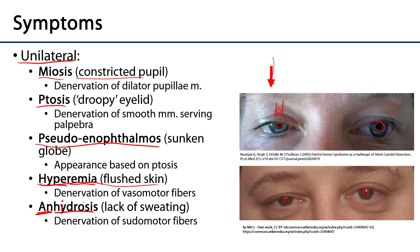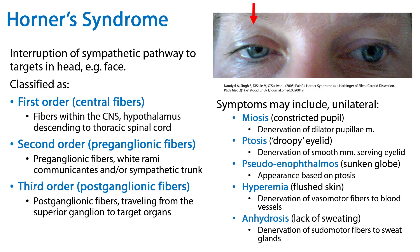So if you see any cluster of unilateral miosis, ptosis, pseudoenophthalmos, hyperemia, or anhydrosis, you'll understand — given the sympathetic pathways to these various target tissues — why. We've discussed the types of Horner's syndrome, where the interruptions may occur, how this might affect target tissues, and how this may present unilaterally as a cluster of symptoms. This is your summary slide. Thank you for your time.